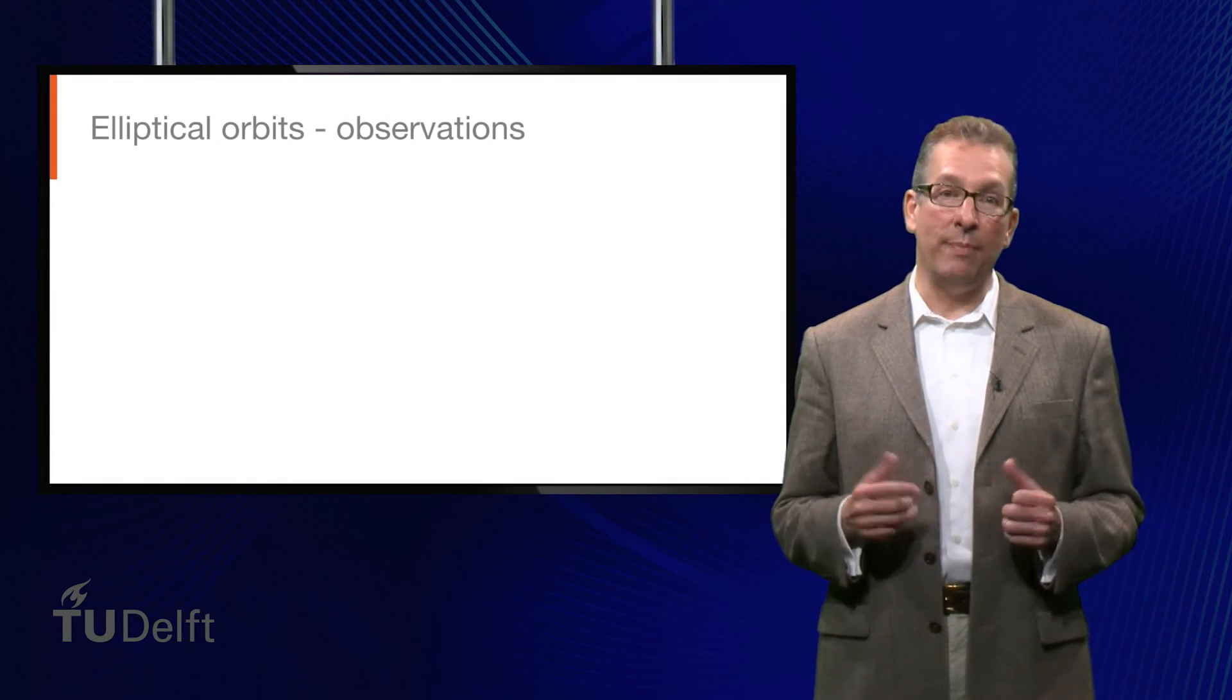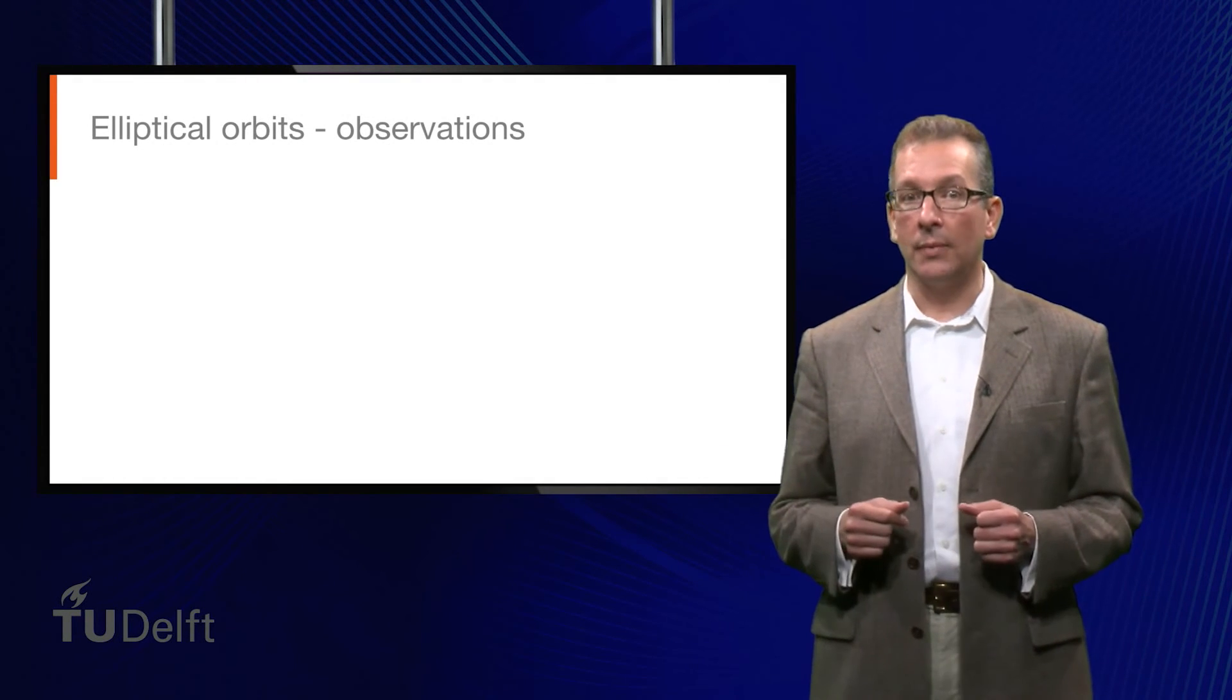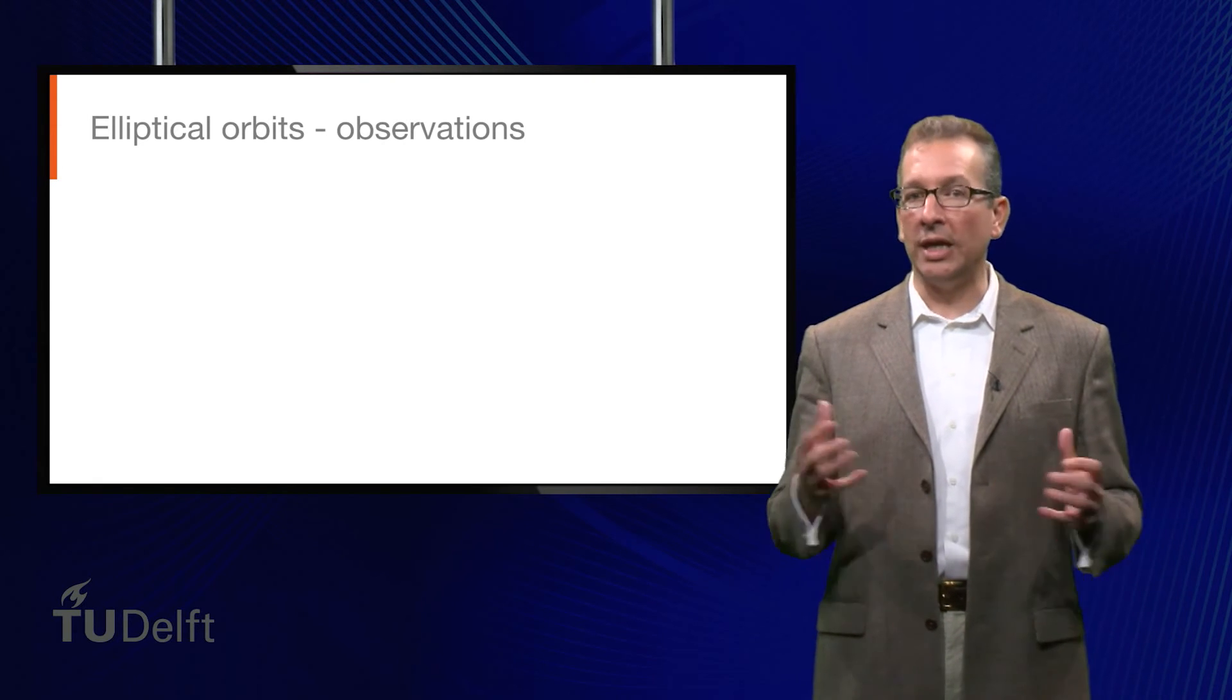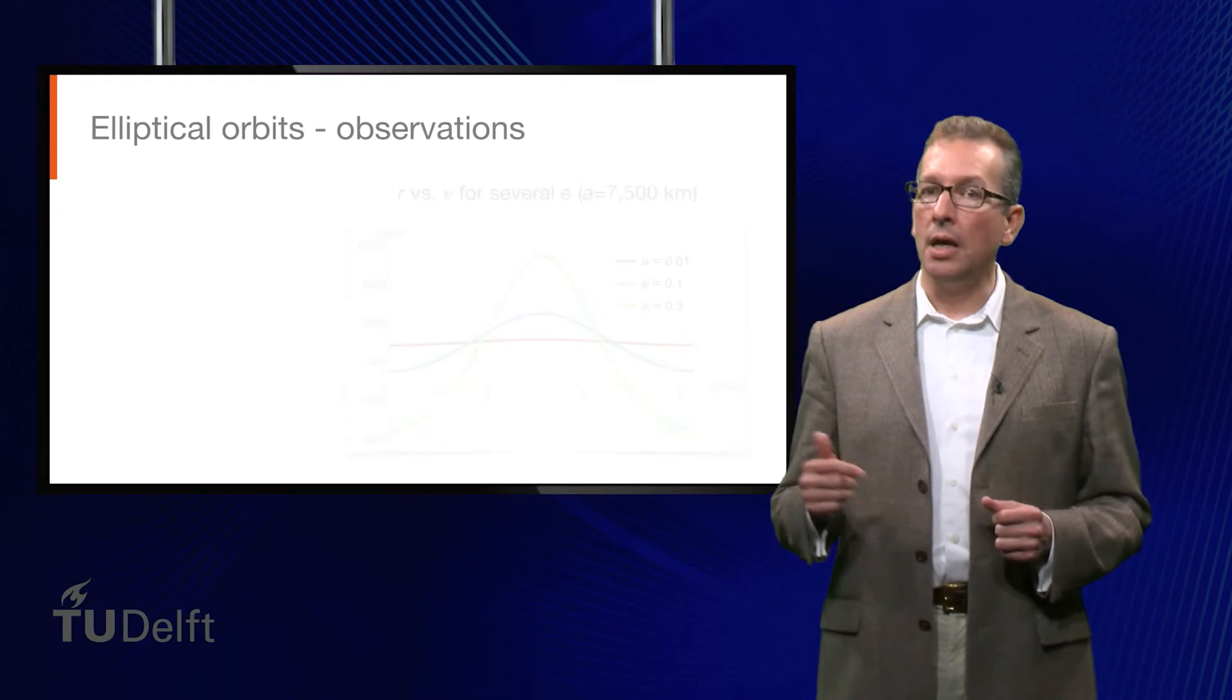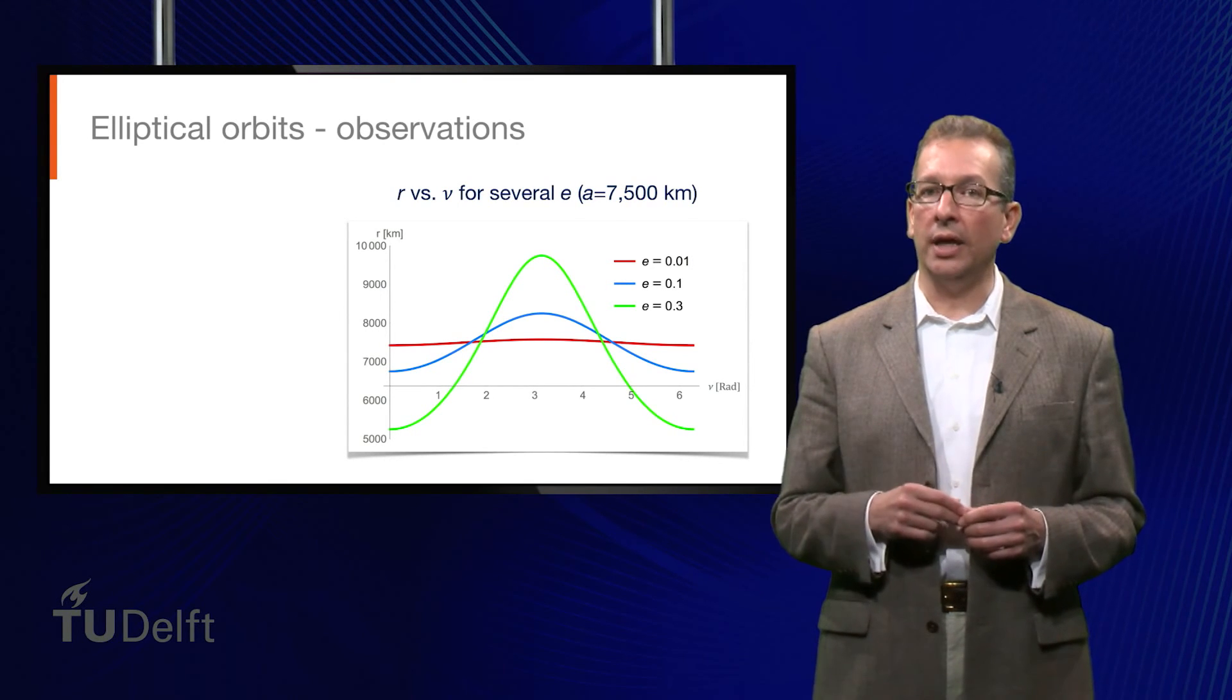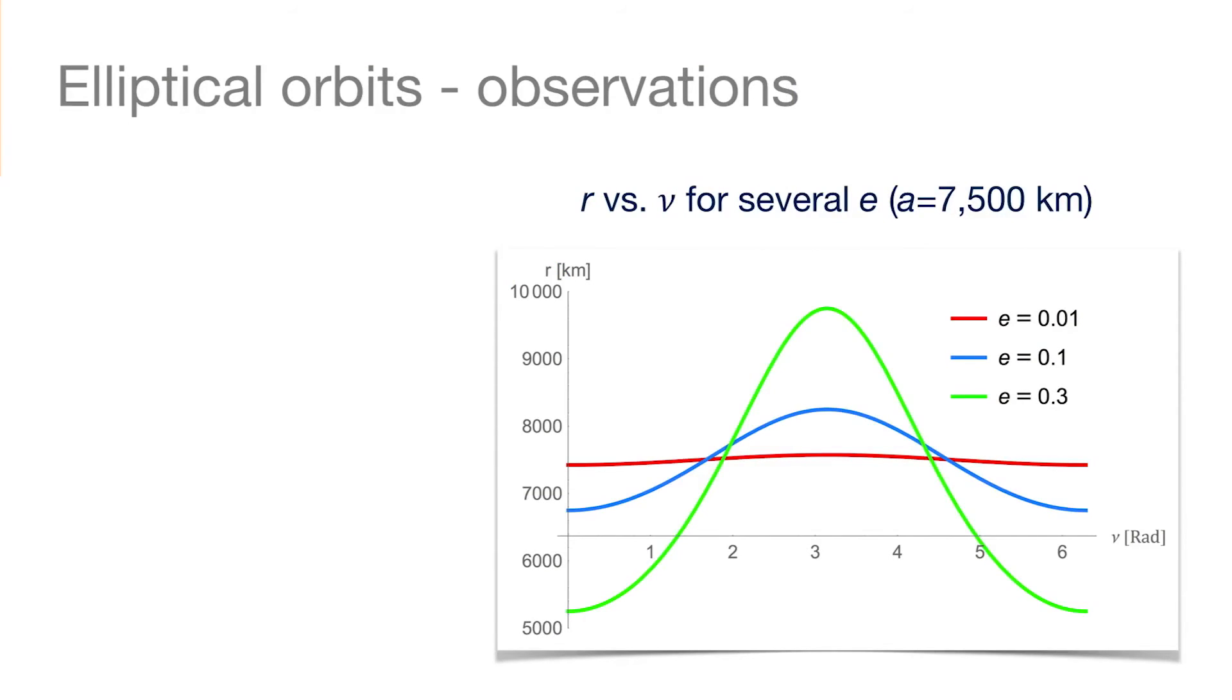In addition to conducting handy back-of-the-envelope calculations as we've just done, we can also use the trajectory equation to make a number of observations about the general nature of elliptical orbits, so that we can get a feel for what's going on. Here we see the variation of the radius for the full range of the true anomaly, and for three different eccentricities. The red orbit, with the smallest eccentricity of 0.01, shows a nearly constant radius. This orbit is almost circular. If we look at the other two orbits, we note that as the eccentricity increases, the variation in radius also increases. For the most eccentric orbit here, the radius at apogee is nearly 10,000 kilometers, whereas its perigee is perhaps 5,200 kilometers.